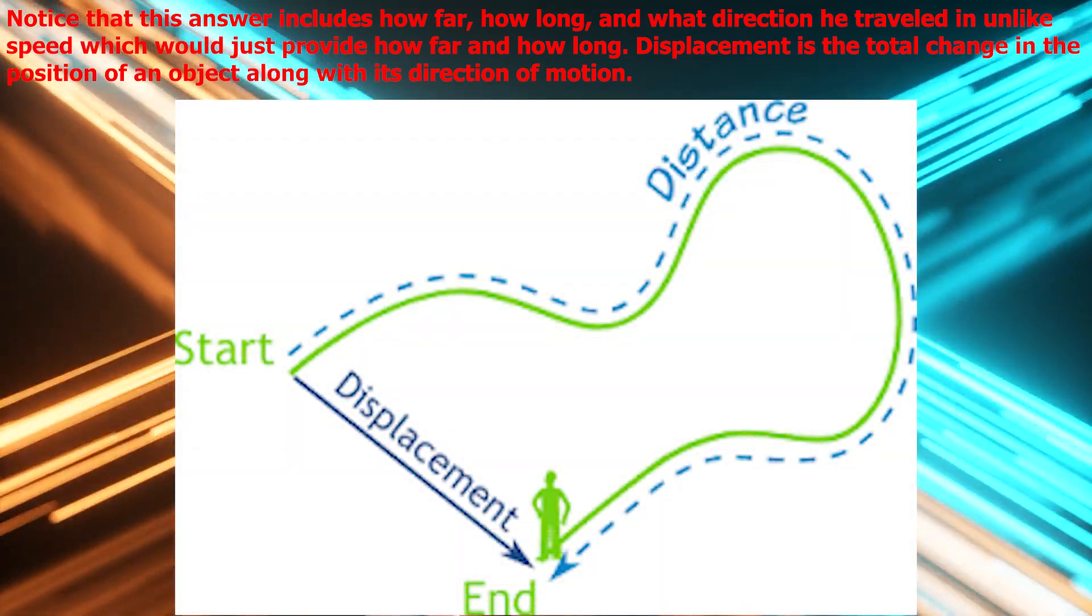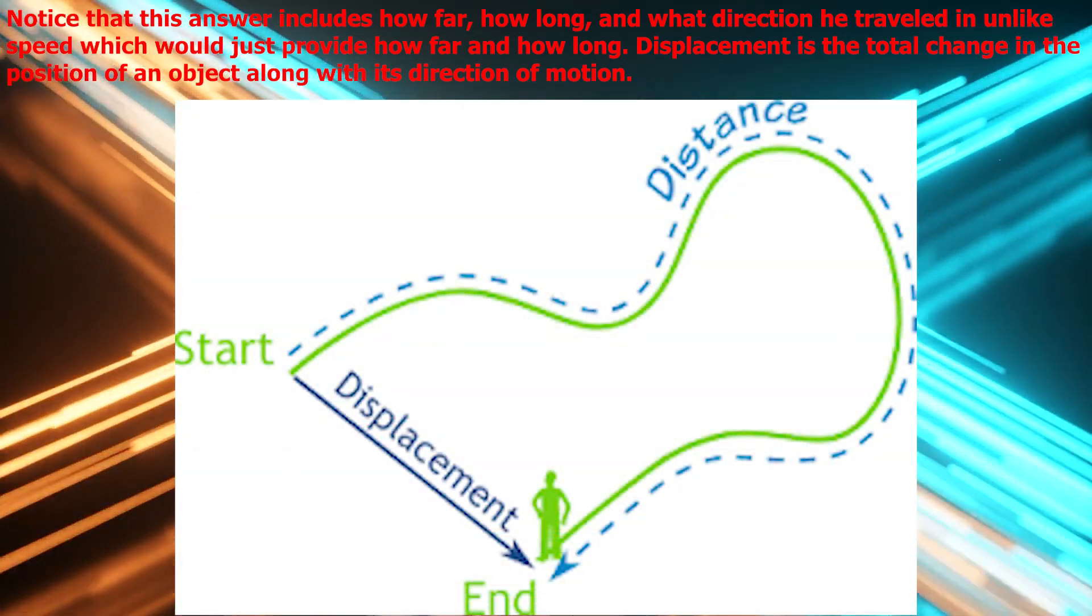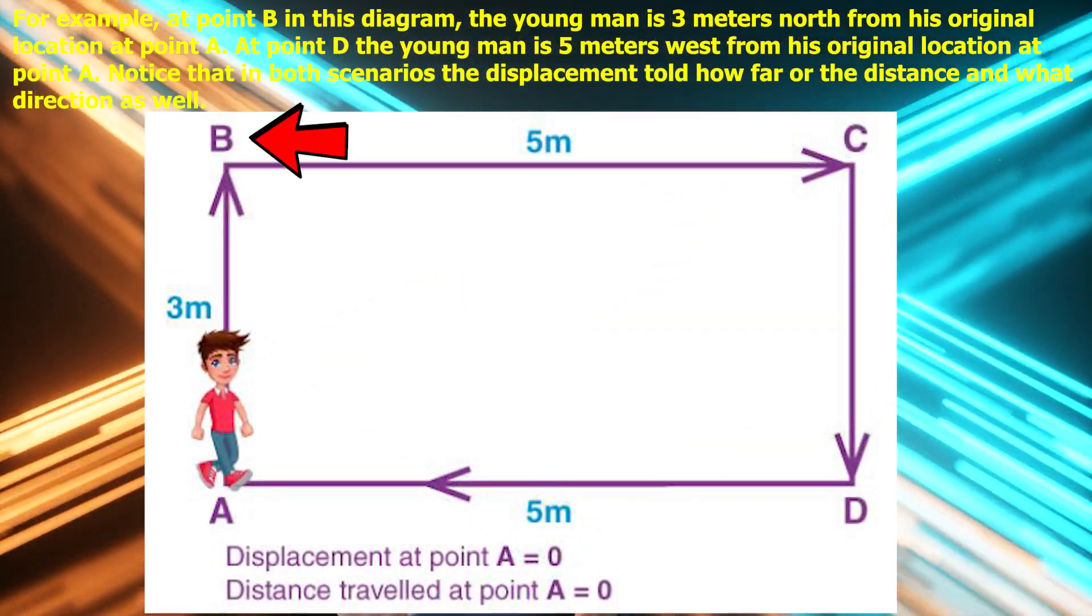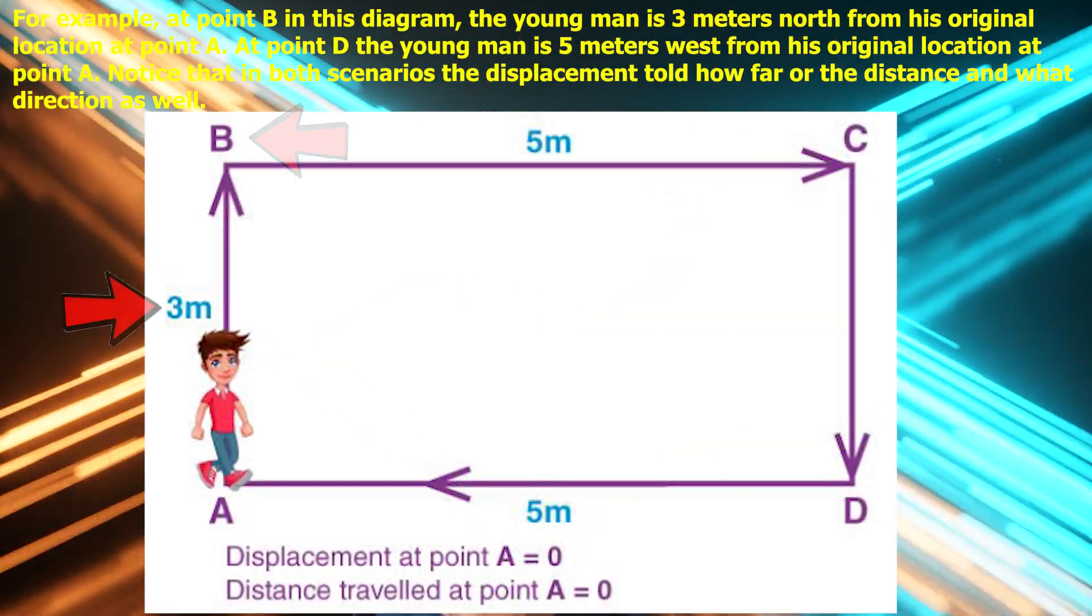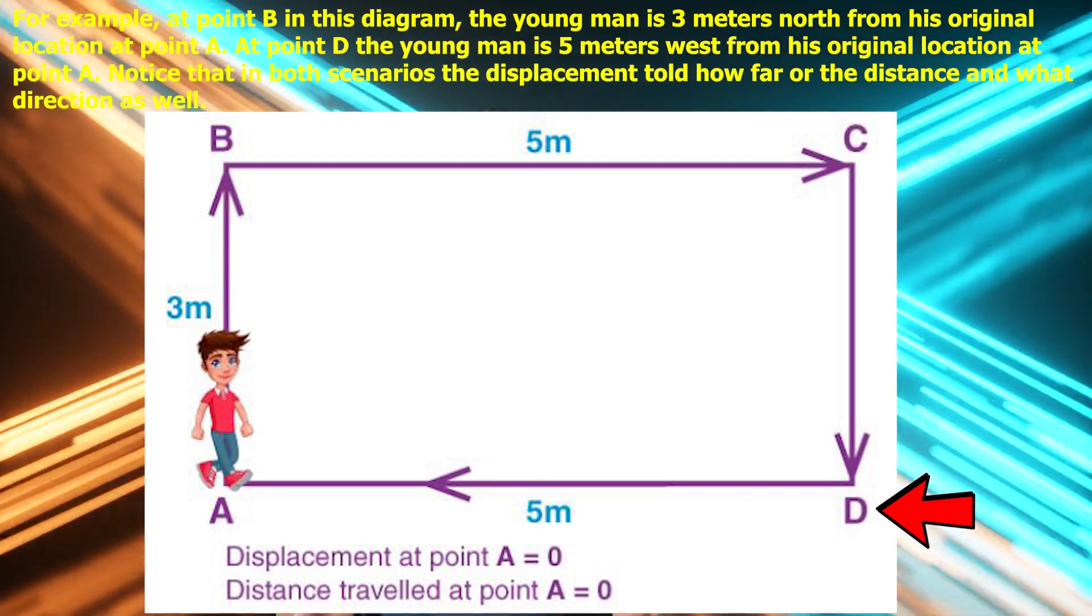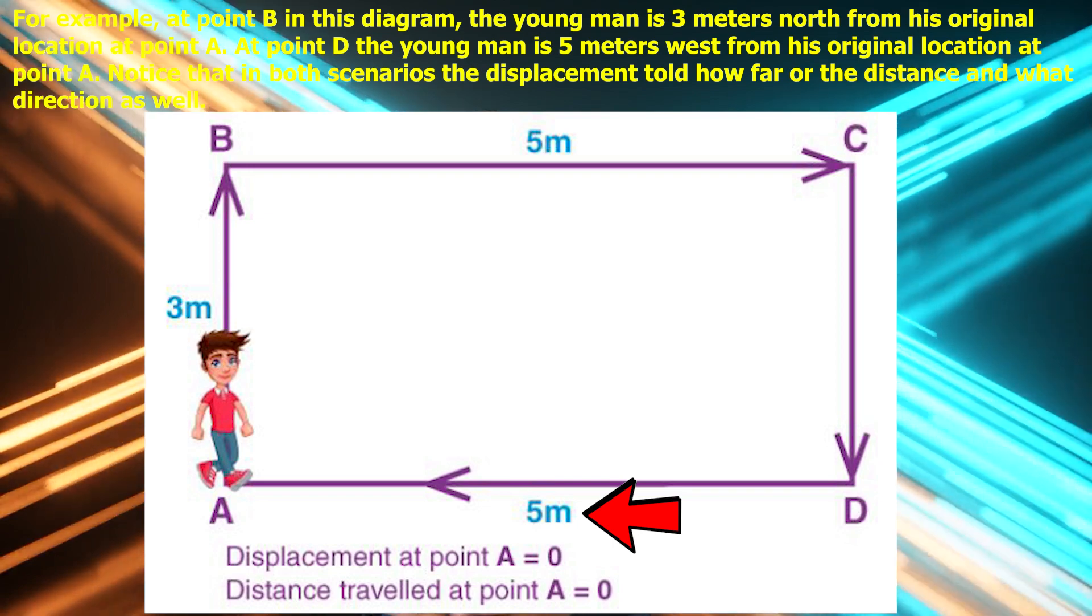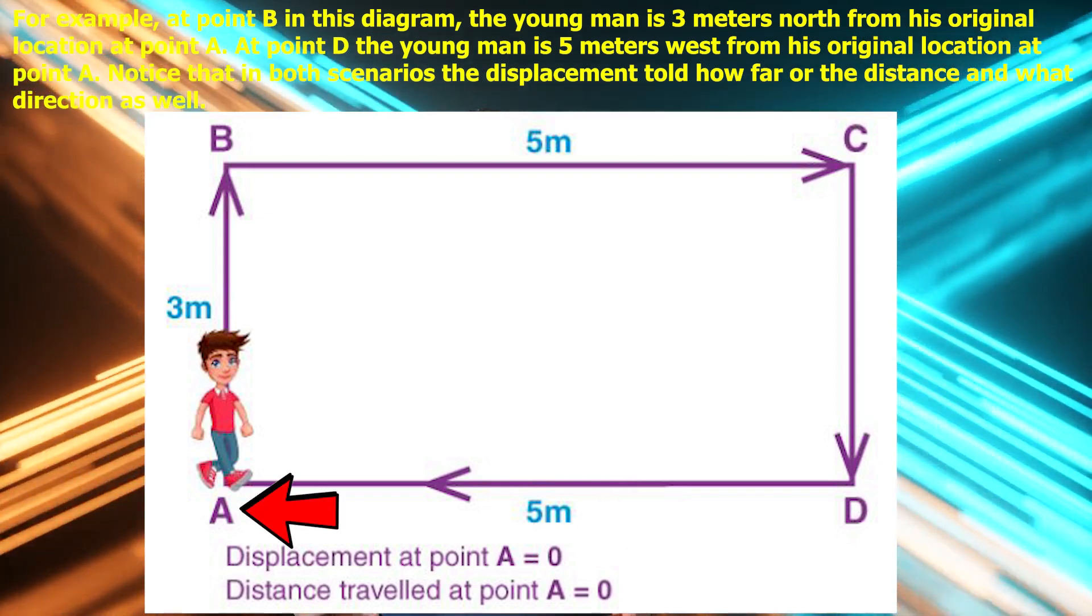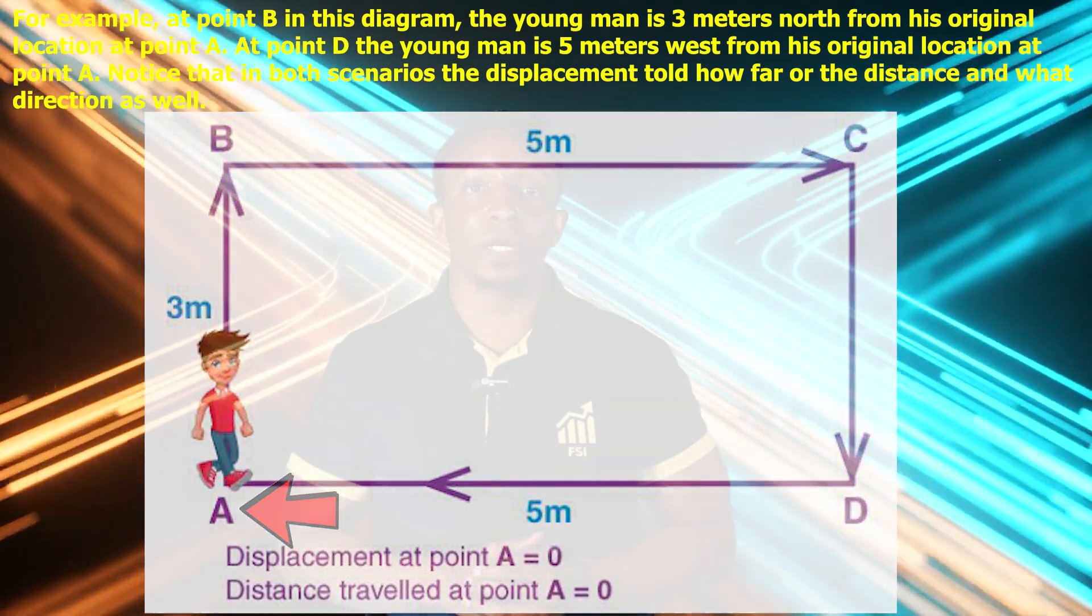Displacement is a total change in the position of an object along with its direction of motion. For example, at point B in this diagram, the young man is 3 meters from his original location at point A. At point D, the young man is 5 meters west from his original location at point A. Notice that in both scenarios, the displacement told how far the distance happens, and what direction as well.